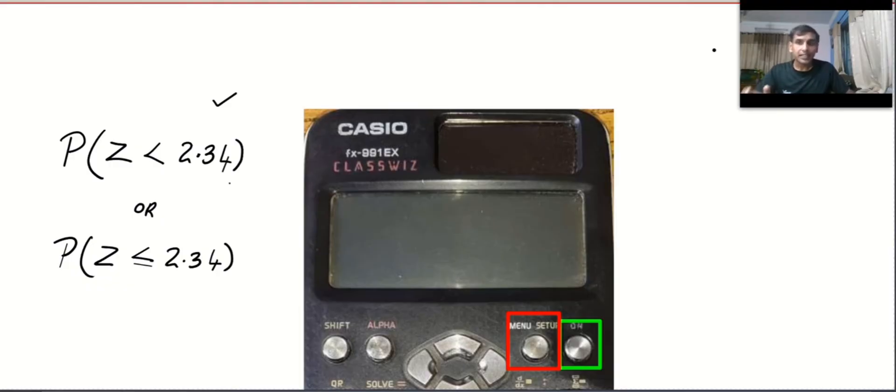Normally we use the standard normal tables. For example, suppose you want to find probability of the standard normal variable less than 2.34 or less than or equal to 2.34.